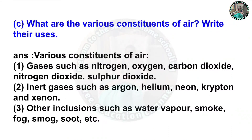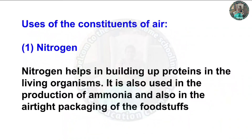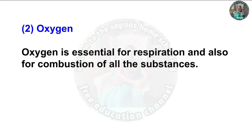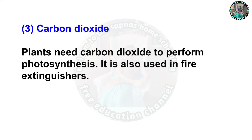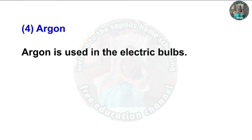Question 6(c): What are the various constituents of air? Write their uses. Answer: Gases such as nitrogen, oxygen, carbon dioxide, nitrogen dioxide, sulfur dioxide, and inert gases such as argon, helium, neon, krypton, and xenon. Other inclusions such as water vapor, smoke, fog, smog, and soot. Uses: Nitrogen helps in building up proteins in living organisms; it is used in production of ammonia and airtight packaging of food. Oxygen is essential for respiration and combustion. Carbon dioxide is needed by plants for photosynthesis and is used in fire extinguishers. Argon is used in electric bulbs.